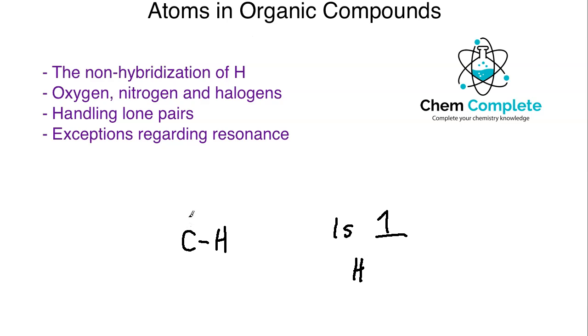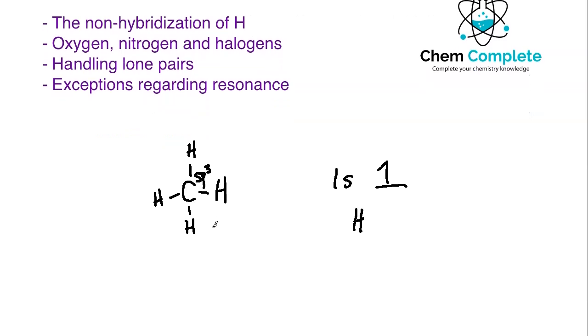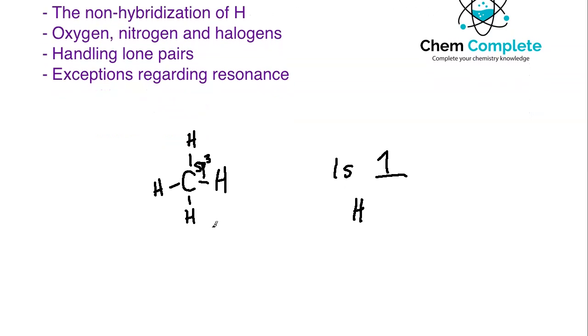So if I were to take a look at something like methane, where I've got all four hydrogens, those hydrogens themselves would only be considered s, whereas the carbon would be considered sp3 hybridized. Just an important note that when we start looking at hydrogens, we don't really associate hybridization with hydrogens.